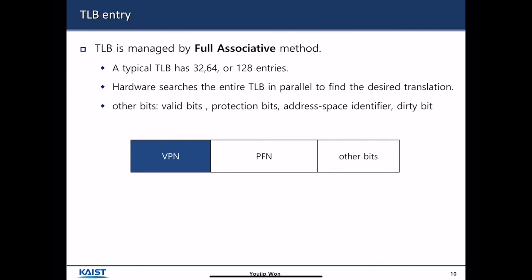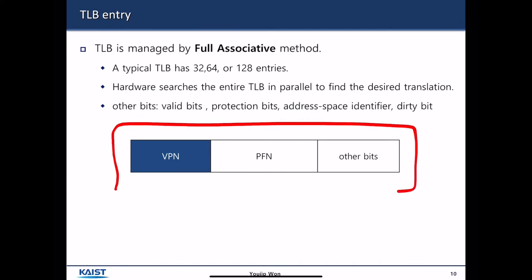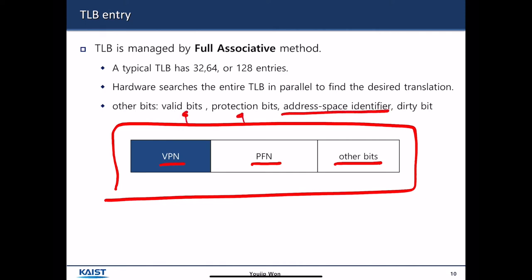How does a TLB entry look? TLB is managed by a fully associative method. A typical TLB has 32, 64, or 128 entries. The hardware searches the entire TLB in parallel to find the desired translation. A TLB entry contains a virtual page number, an associated physical frame number, and other flags. The other bits include a valid bit, protection bits, an address space identifier called ASID, and a dirty bit.